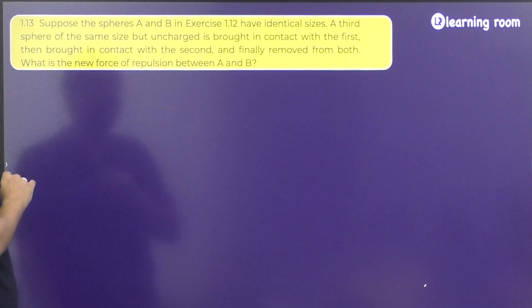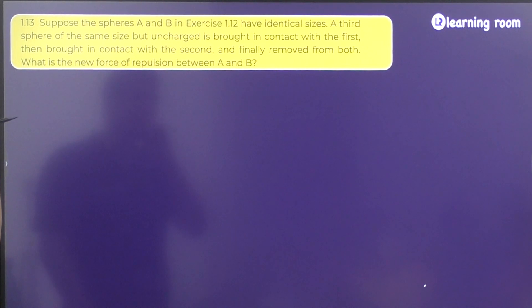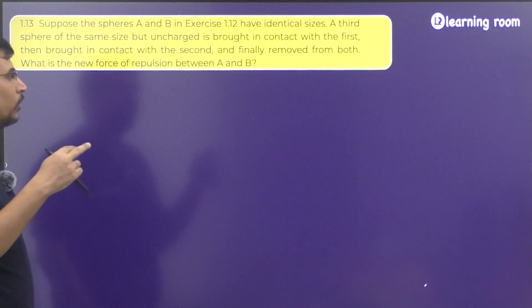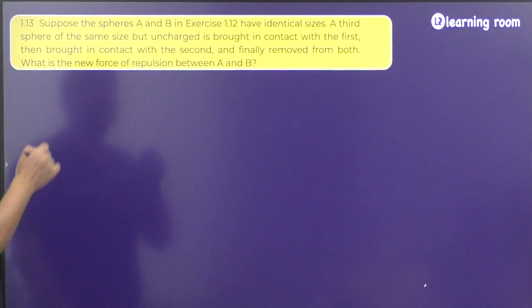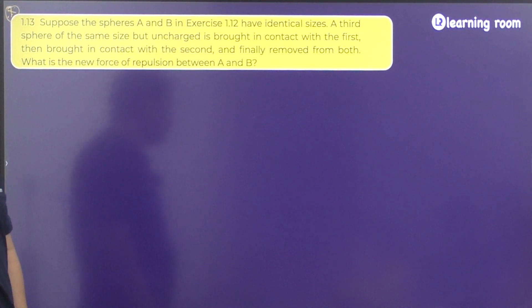Suppose the spheres A and B in exercise 1.12 have identical sizes. A third sphere of the same size but uncharged is brought in contact with the first, then brought in contact with the second and finally removed from both. What is the new force of repulsion between A and B? This is an important question, listen to this.